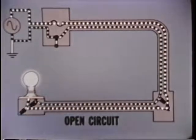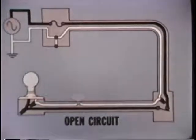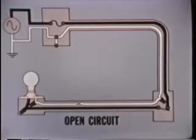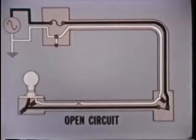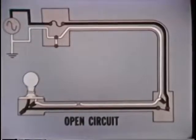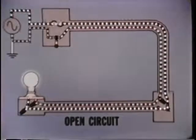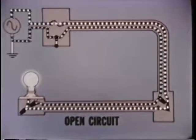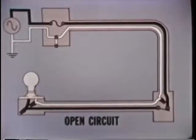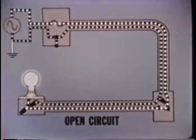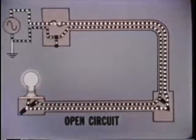An open circuit results when one or more conductors in a circuit become broken, burned, or otherwise separated to interrupt their continuity. An open circuit prevents any flow of current in the circuit. In this example, the neutral conductor has been broken to stop the current flow. If the hot conductor was broken instead, the effect on the circuit would be the same. If any part of this circuit fails, it breaks the continuity and stops the flow of current. Replacing the defective circuit component or repairing the broken wire restores the circuit to normal operation.